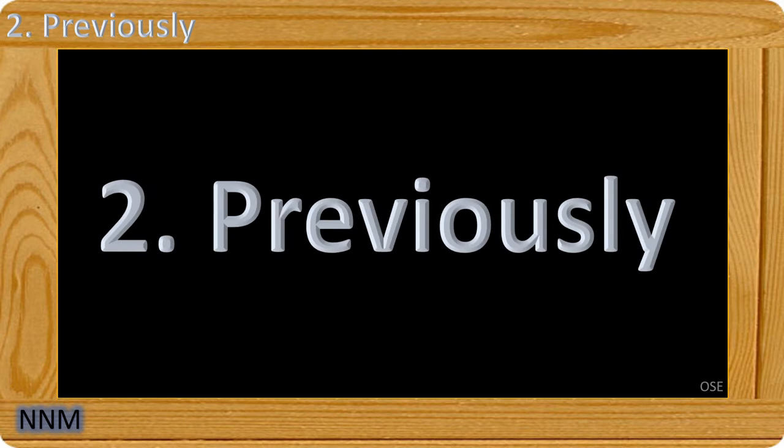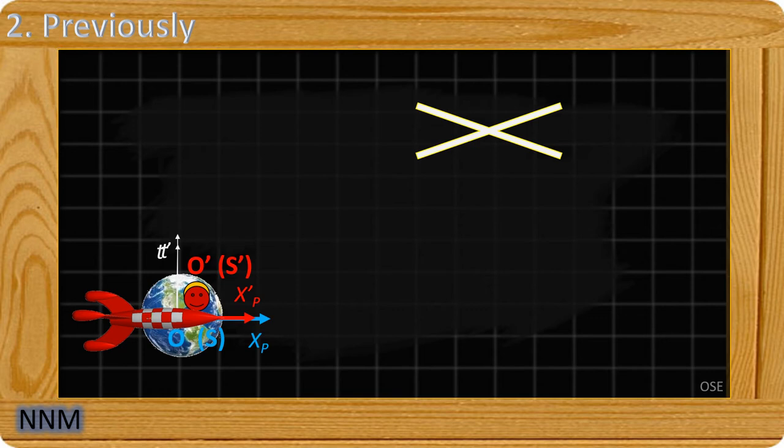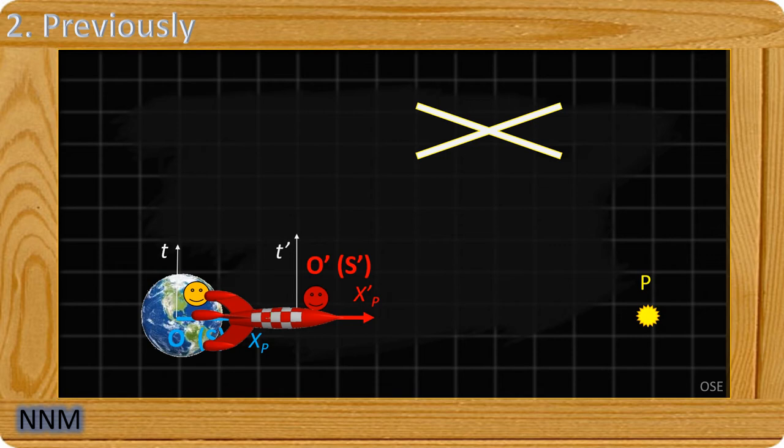Previously, in the previous videos, we saw that these were specific reference frames S and S' where the origins of place and time coincide. In addition, the demonstration only concerns a light wave emitted at O and O' at the instant T equals T' equals zero.